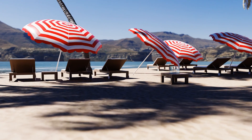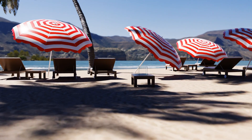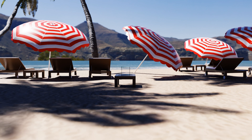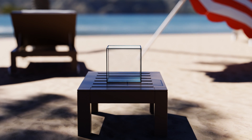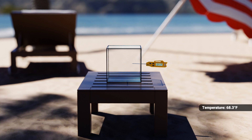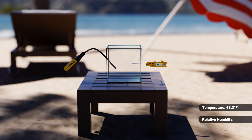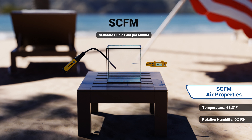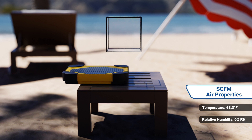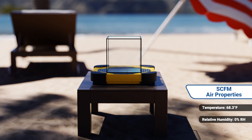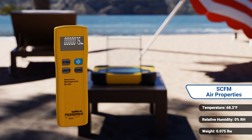To get an idea of the air we're moving, we need to understand the temperature and relative humidity of that air. Here we're showing a box of air at sea level. This particular box of air is 68.3 degrees Fahrenheit and 0% relative humidity. These are the conditions of standard CFM air, or SCFM. Air has weight and takes up space — this box of air weighs 0.075 pounds.